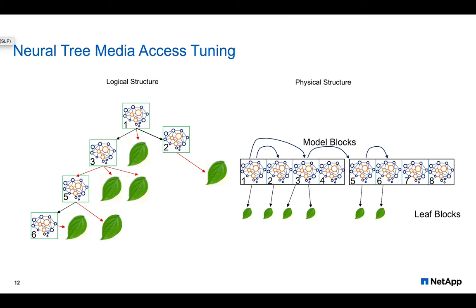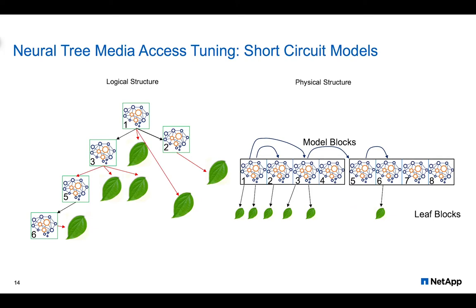Secondary storage is very sensitive to the number of media accesses, which dictates performance, and neural trees have a couple of ways of tuning that. Because of the granularity of our models — packing multiple models into a single physical block — there are opportunities to tune the access profile. If we detect a hot spot, say the leaf off of node five is extremely popular, we can swap model five out to the same physical block as the root model, reducing the red arrows to just one. A second option is to short-circuit: take the leaf off of five and attach it directly to model one, again reducing disk accesses to one.